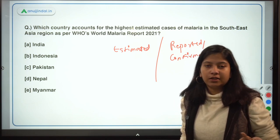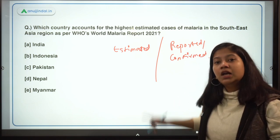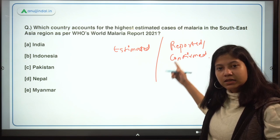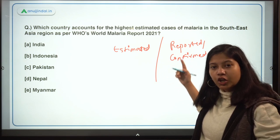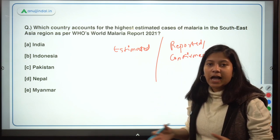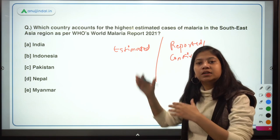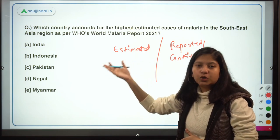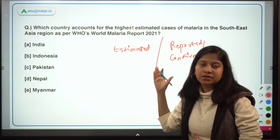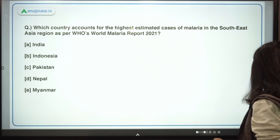So the reported or confirmed cases are the actual numbers that have been recorded and made available to WHO, which prepared this report.